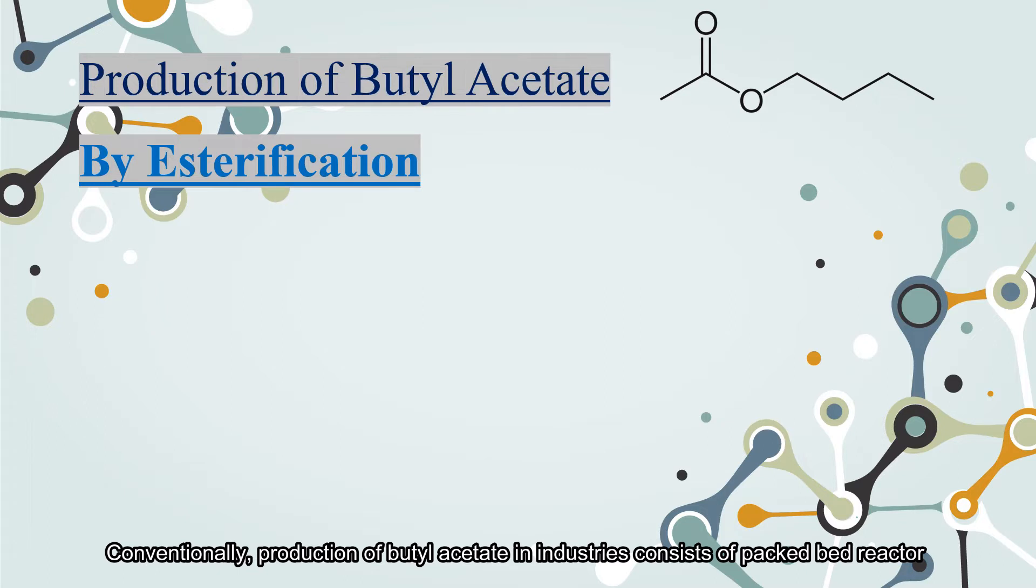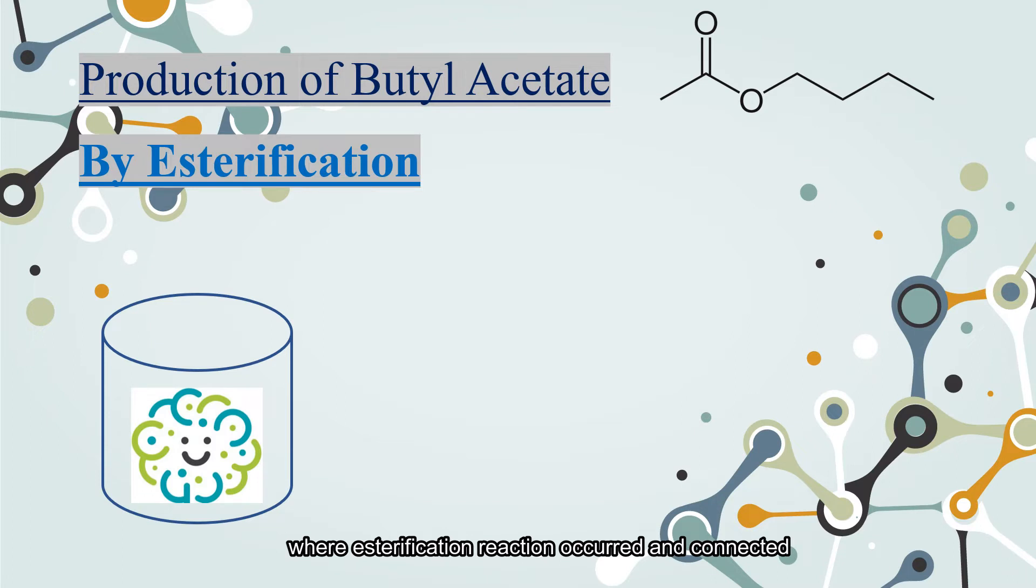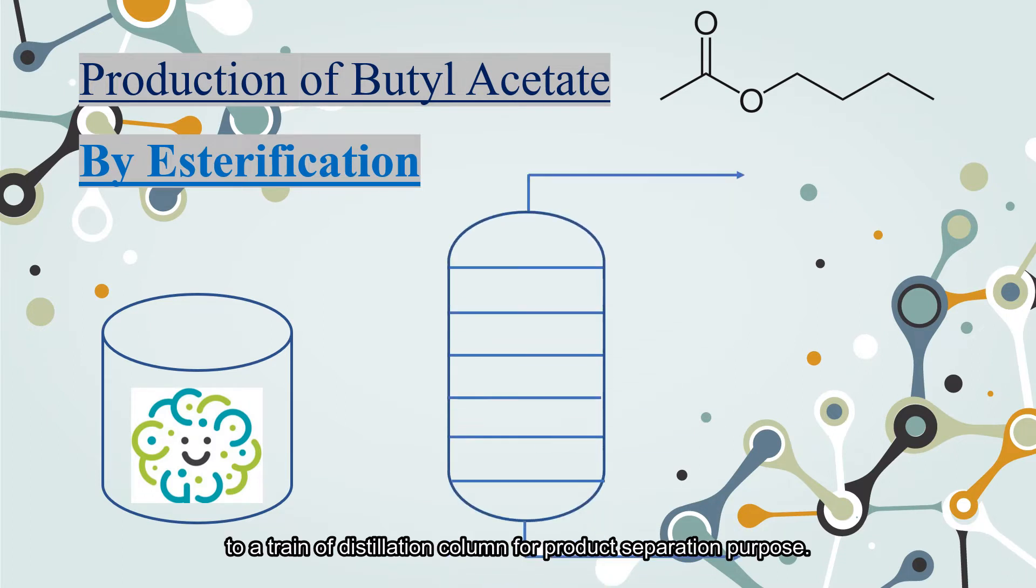Conventionally, production of butyl acetate in industries consists of a packed-weight reactor where esterification reaction occurs and is connected to a train of distillation columns for product separation purposes.